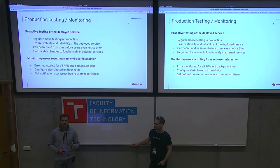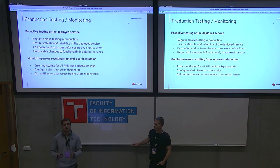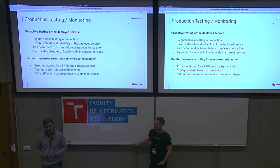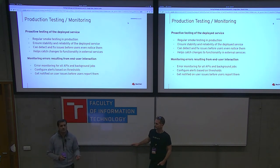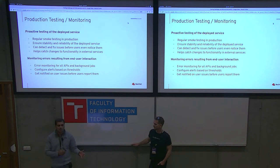The third focus area was production testing and monitoring. We wanted to conduct regular testing against the service deployed in production, specifically smoke testing. It doesn't need to be full regression testing — just a subset of your functionality tested via smoke tests. This helps ensure the stability and reliability of the service in production and can identify and potentially fix bugs before users ever see them. In some rare cases, it also helps catch changes to external services you're integrated with that you don't have control over.